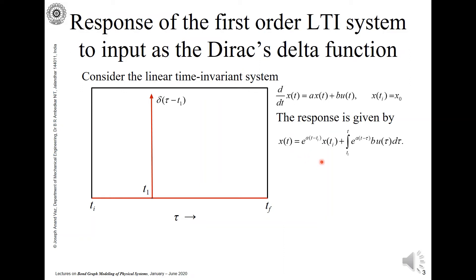x at the present time t is equal to e raised to a times t minus ti times x at ti plus integral ti to t e raised to a times t minus tau into b into u tau d tau.